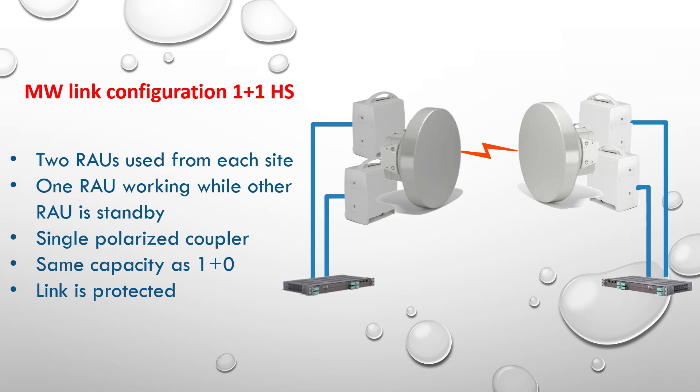To overcome this problem of protection, the solution was the configuration of 1+1 HS, which stands for hot standby. In this type, the link is installed using two ROUs from both sites, one microwave dish from each site, a single polarized coupler, and one IDU unit from each site. Two ROUs and two IF cables are installed, but only one ROU works and the other is on standby — so it seems like 1+0 but protected. They have the same capacity. If any failure takes place at the main ROU, the standby ROU will take over and the traffic will not be affected.